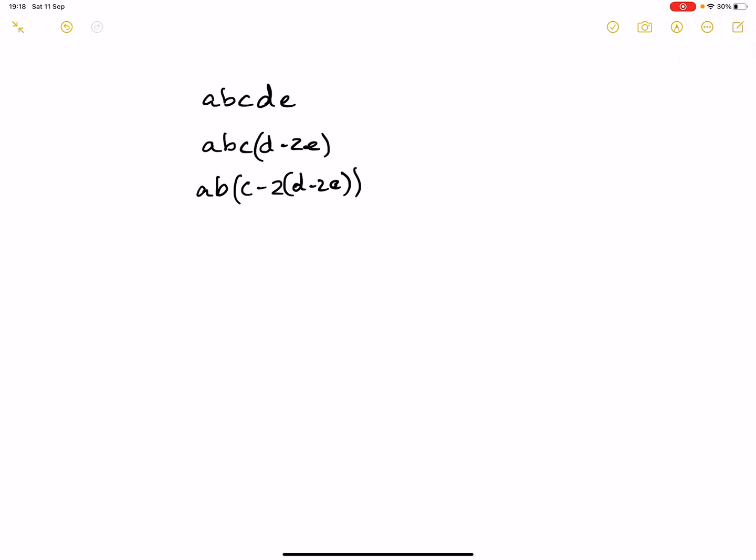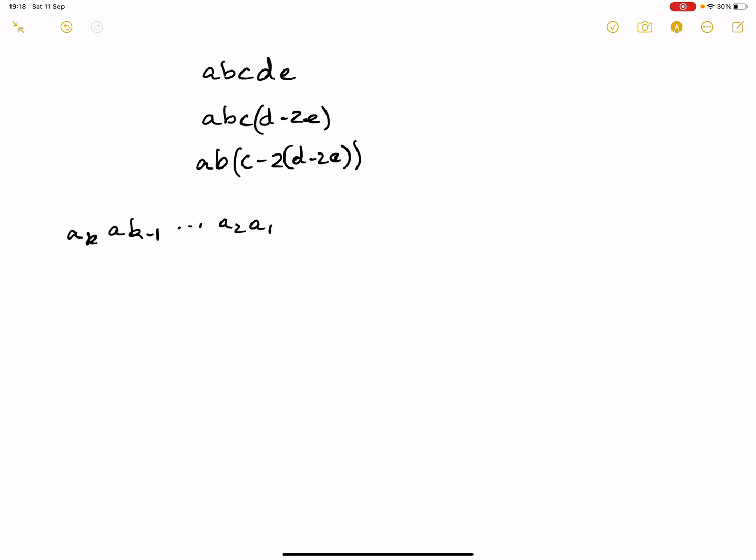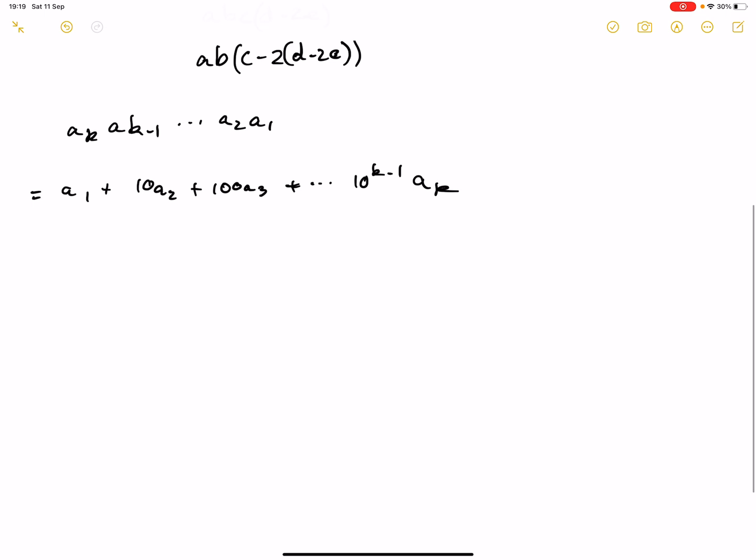So what we're going to do is we're going to try and prove that. So if you had our number, Ak, Ak-1, all the way to A2, A1, that is equal to A1 plus 10A2 plus 100A3, all the way to 10 to the K minus 1 times Ak. And it's 10 to the K minus 1 because if you note, the power of 10 multiplied by A1 is 0. So it'll be 10 to the K minus 1. Perhaps next video I should denote it as A0 rather than A1. Anyway, food for thought.